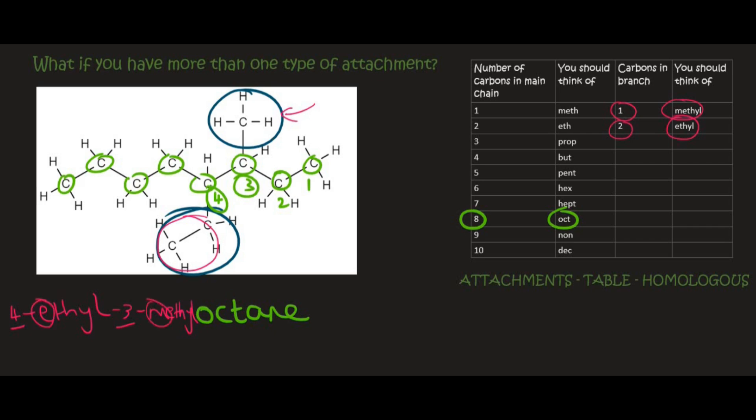And by the way, if there were two methyls, you would have to add dimethyl over there. That doesn't count as part of the alphabet. You don't look at that D. You're always looking at the original attachments, which is methyl and ethyl. And so that's it for this video. Thank you for watching.